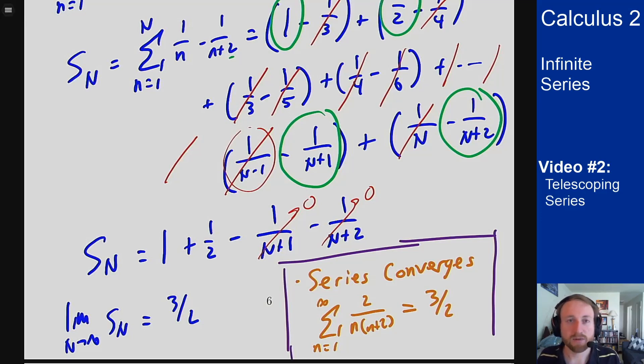So there is one example of a type of series that we can actually compute the value for. There aren't many of those, but this is one of them, telescoping series, because they collapse and become nice and easy to simplify once you work out what the partial sums are and then can take the limit of that.